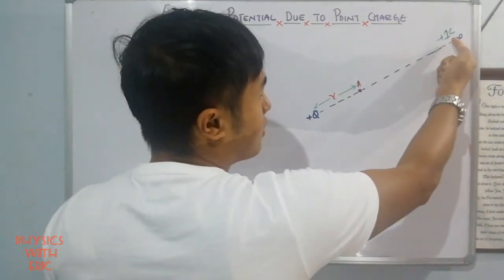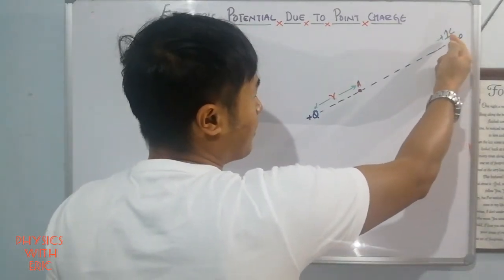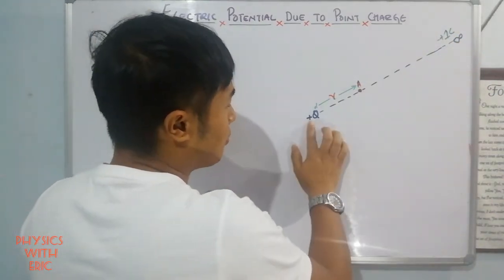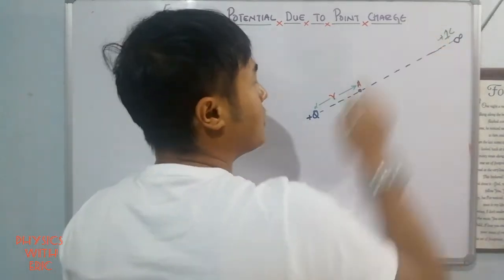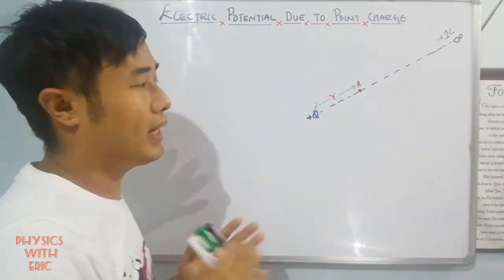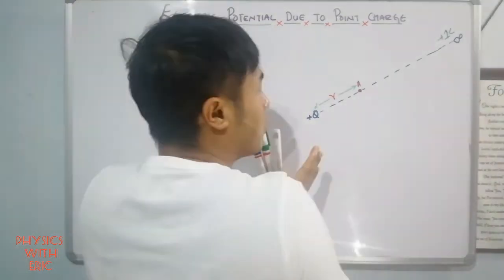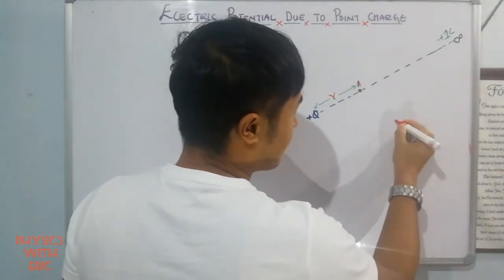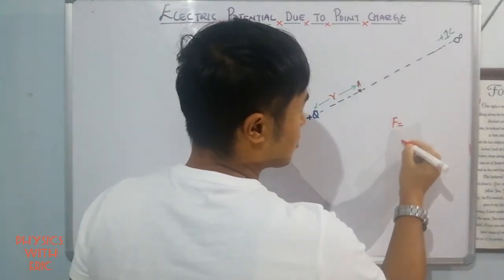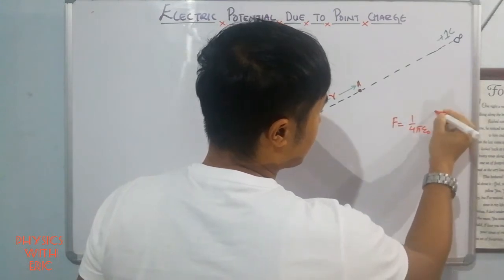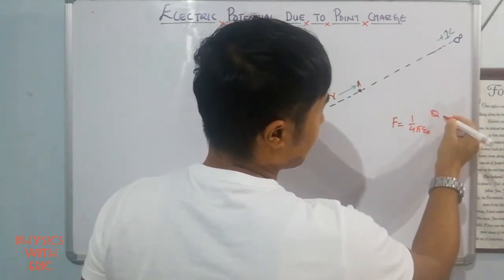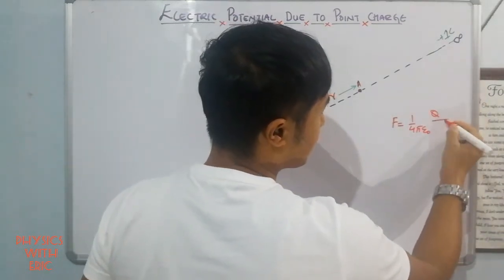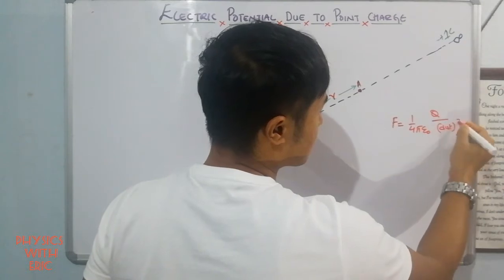As soon as this unit positive test charge starts moving from infinity towards point A, it will experience a force. This force is of a repulsive nature, and is given by F = (1/4πε₀) × (q1·q2 / r²), where q1 is 1 coulomb.